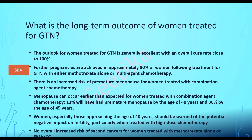What is the long-term outcome of women treated for GTN? The outlook is excellent with an overall cure rate of 100%. Future pregnancies are achieved in 80% of females following treatment for GTN, either with methotrexate or multi-agent chemotherapy. There is increased risk of premature menopause for women treated with combination agent chemotherapy — 13% will have premature menopause by age 40, and 36% will have menopause by age 45. These numbers have recently been added to the new guideline.